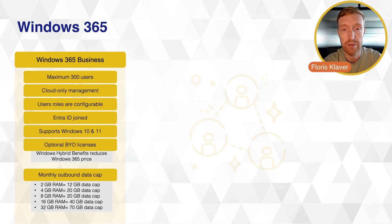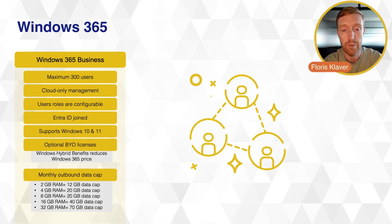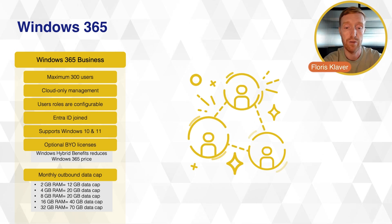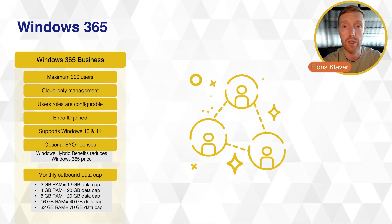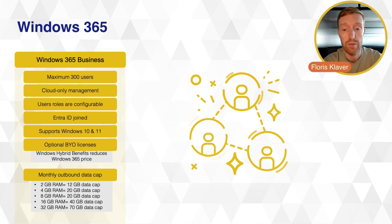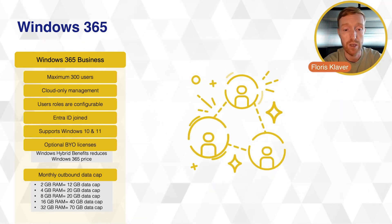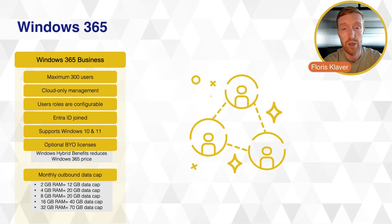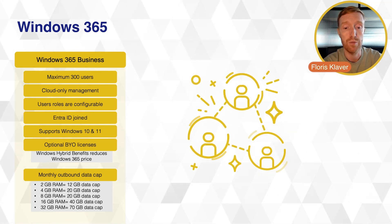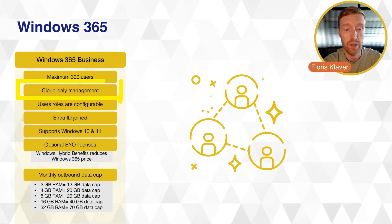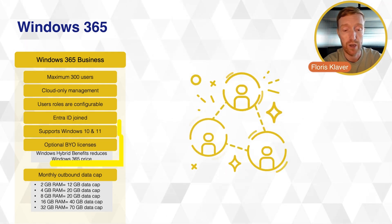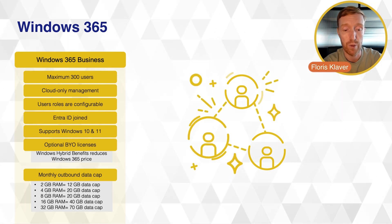Finally, Windows 365 — not generally talked about very much, so I'll keep it short. Basically, this is a product Microsoft has released to simplify the Azure Virtual Desktop motion, which can be difficult to set up. It is your Windows 365 Cloud PC. There are some flavors to choose from: Windows 365 for Business, which is for a maximum of 300 users, is for small and mid-sized enterprises with cloud-only management, configurable user roles, and an Entra ID join. It supports Windows 10 and 11, and you can optionally bring your own licenses to potentially reduce costs through the Windows Hybrid benefit.